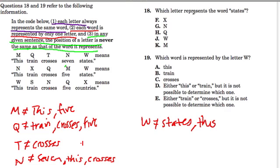Alright, what do we want to know? Which letter represents the word states? So here are choices: X, N, Q, W, M. Well, let's look. We already know that W cannot represent states. So W is out.